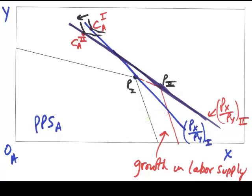In the process, notice the full employment point shifts downward, so country A is going to produce more of good X, but it's also going to produce less of good Y.